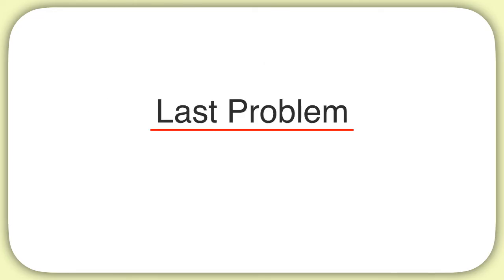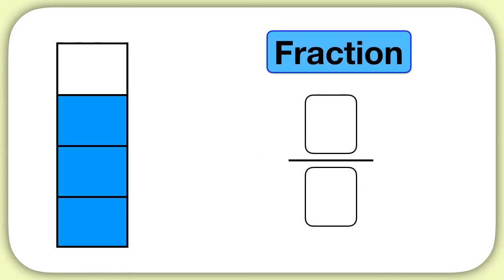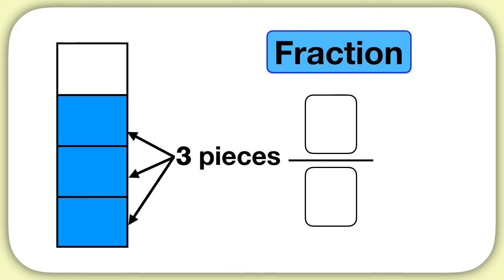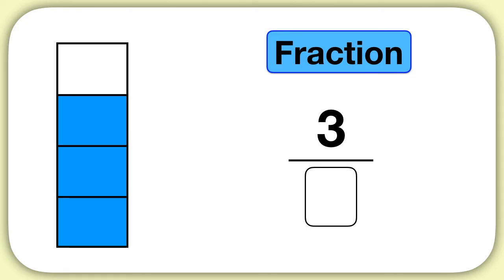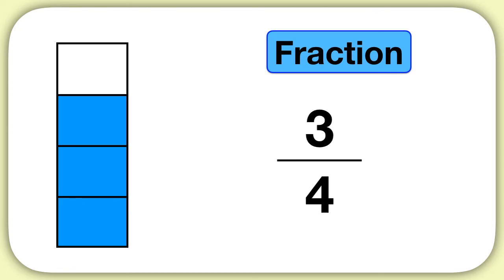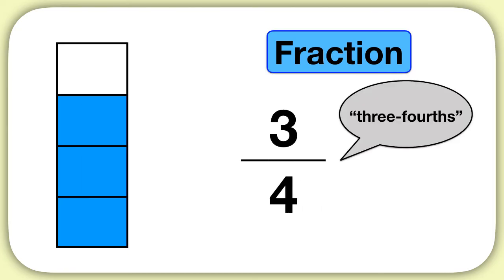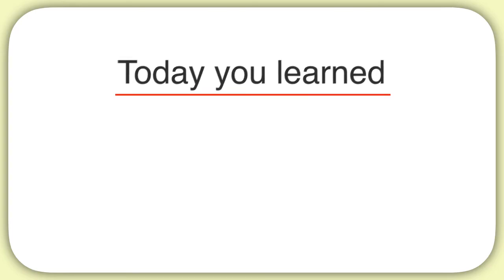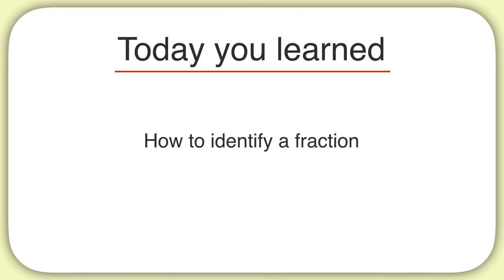Now here's your last problem for this video. What fraction of this rectangle is shaded? Well, in this rectangle, we can see that 3 pieces are shaded, so we put that number 3 above the line of our fraction. Then we can count that there are 1, 2, 3, 4 pieces in the whole rectangle, so we put that number 4 below our line. This is the fraction 3 fourths. Today you learned how to identify a fraction.